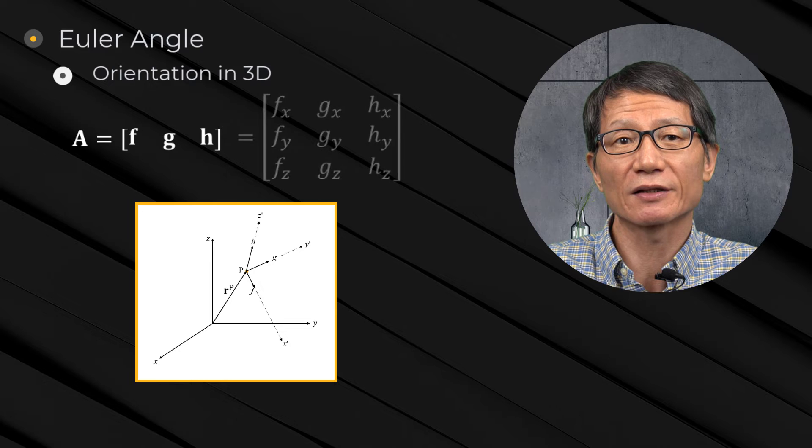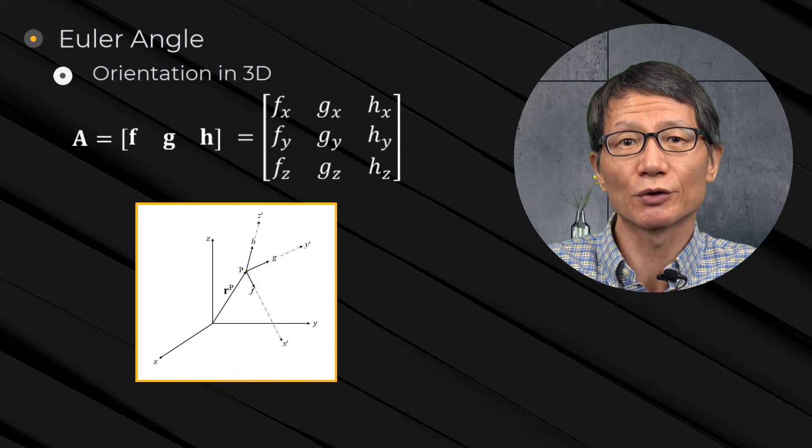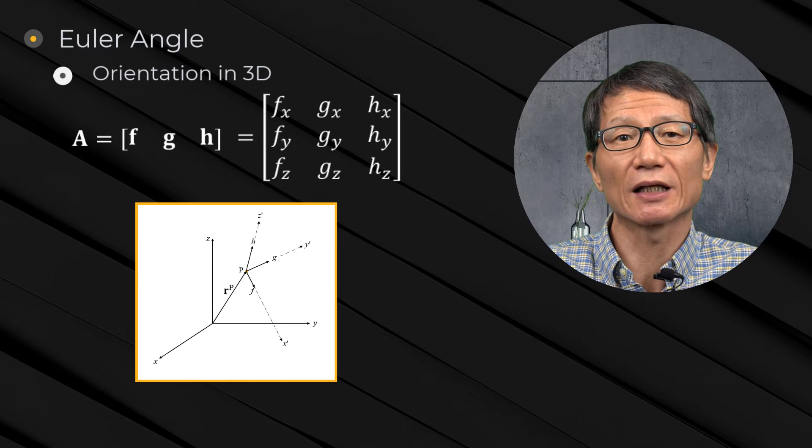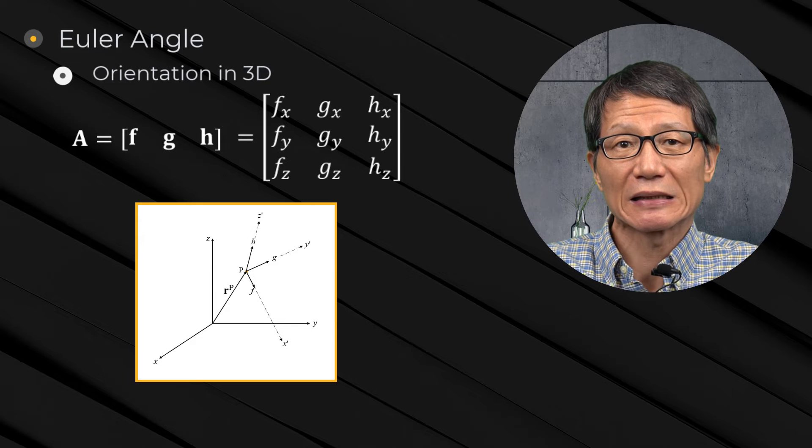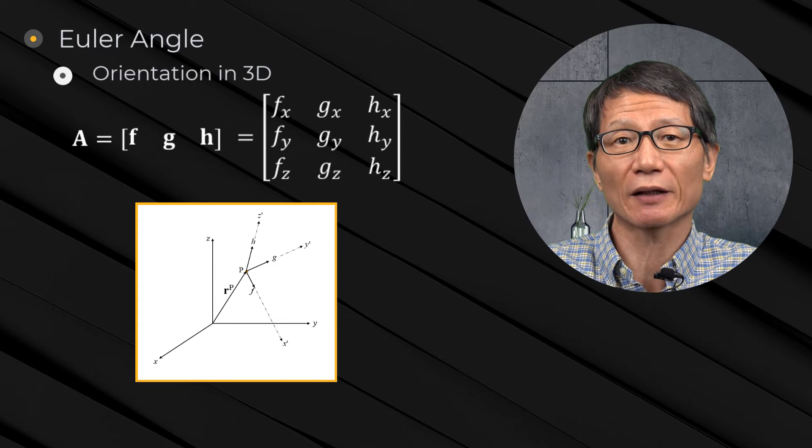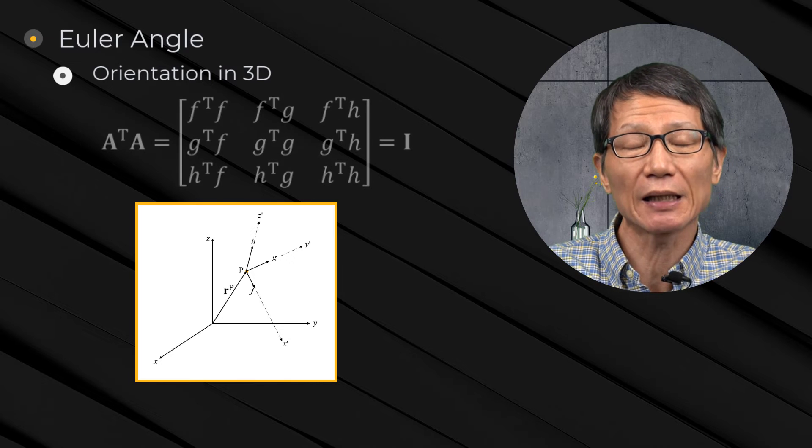The orientation matrix can be represented by matrix A as follows. It is important to know that orientation matrix comprises f, g, and h vectors. Since f, g, and h vectors are unit orthogonal vectors, it has the orthogonal property like this.